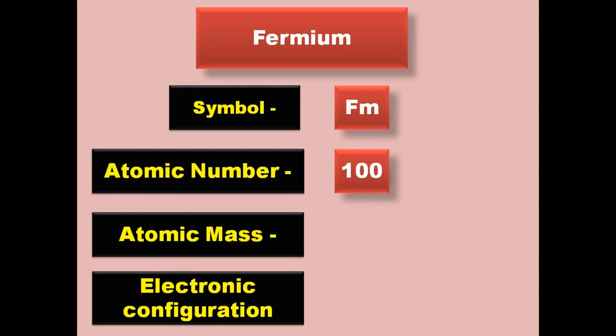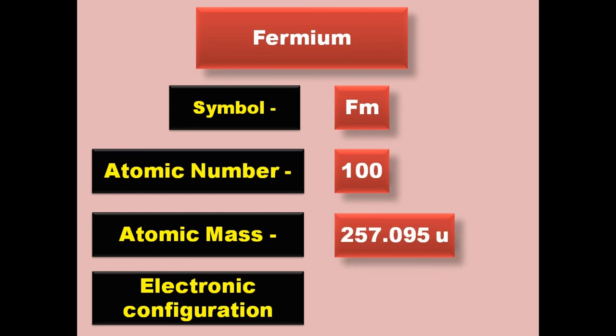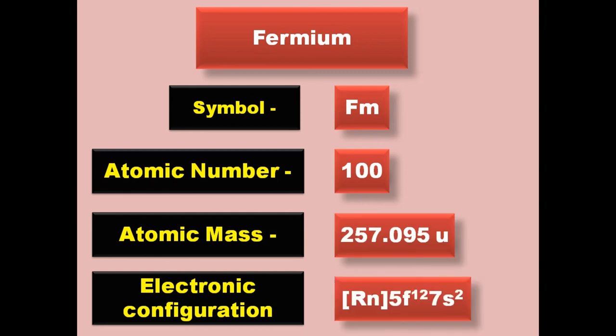Fermium has symbol Fm, atomic number 100, atomic mass 257.095, electronic configuration [Rn] 5f12 7s2. Fermium is an actinide and exists in solid form at room temperature.